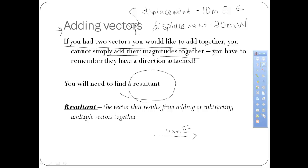Now I'm going to draw the vector for my second displacement, which is 20 meters west. Try to draw these as proportional as possible — 20 meters is twice as much as 10, so I'm going to go twice as far. We've already been doing this in class; I've been drawing vectors showing the path that stuff is traveling, we just haven't been calling it a vector. If I were to add these two vectors together — 10 meters this way and 20 meters this way — the resultant would be a vector going 10 meters west, because I ended up here and this is where I started.